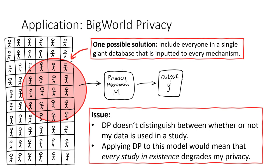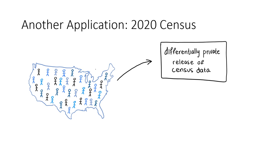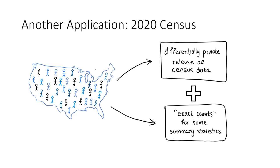Another application we're interested in is the 2020 census, which is a particularly relevant application. Basically, the plan for the 2020 census is that after collecting data about US residents, a lot of that data is going to be released in a differentially private manner. However, there are also plans to release exact counts for some summary statistics, which will not be released in a differentially private setting.